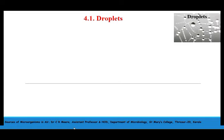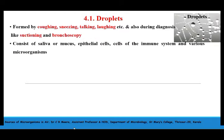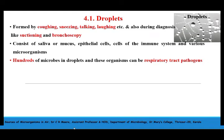Coming to the first type of bioaerosol, that is droplets. Droplets are formed by human activities like coughing, sneezing, talking, and laughing, and also during disease diagnosis procedures like suctioning and bronchoscopy. Droplets consist of saliva or mucus, epithelial cells, cells of the immune system, and various microorganisms. Hundreds of microorganisms can be seen in such droplets and these organisms can be pathogenic if discharged from infected persons. Usually, pathogens of the respiratory tract are liberated as droplets.